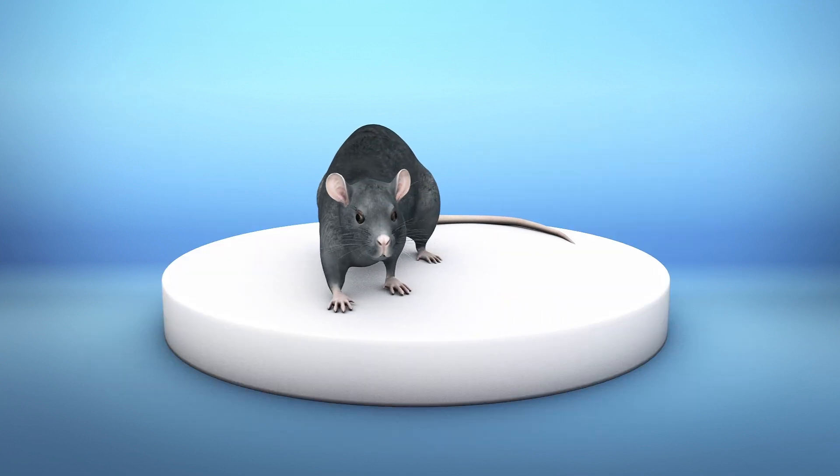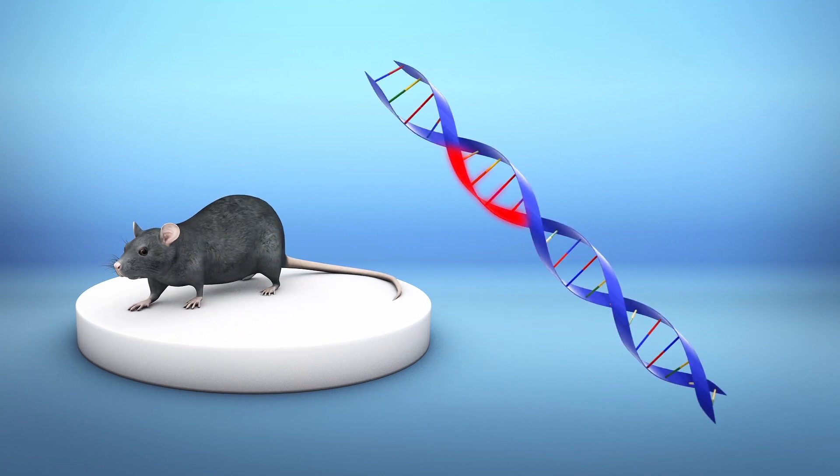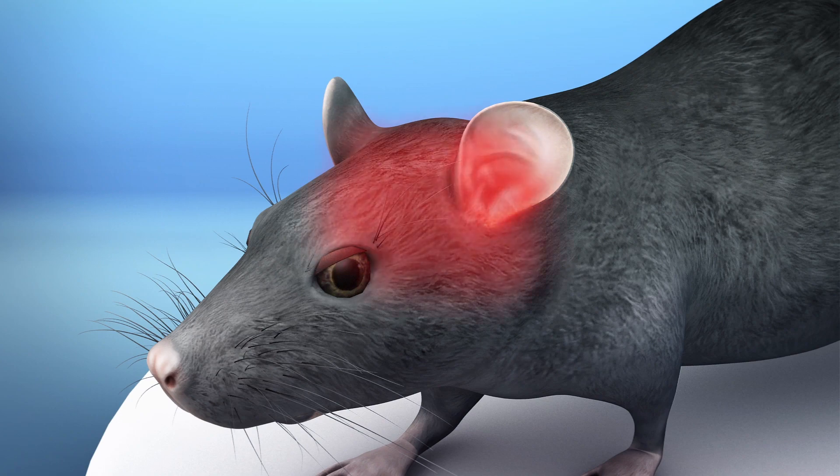The researchers tested their theory on mice. They altered the DNA of the mice to remove CCR5. This was found to enhance the animals' intelligence.